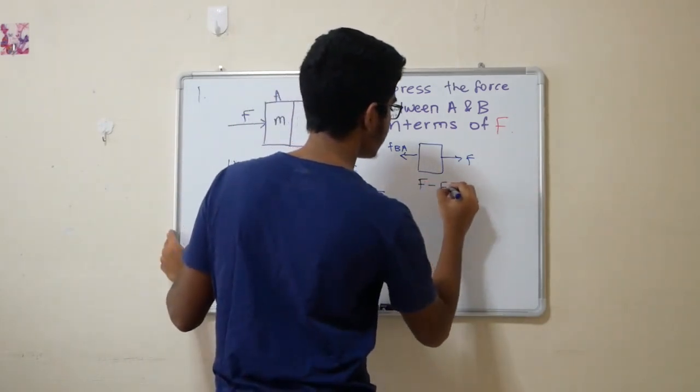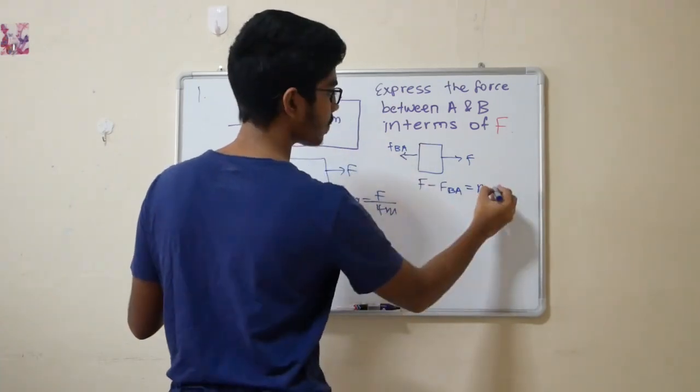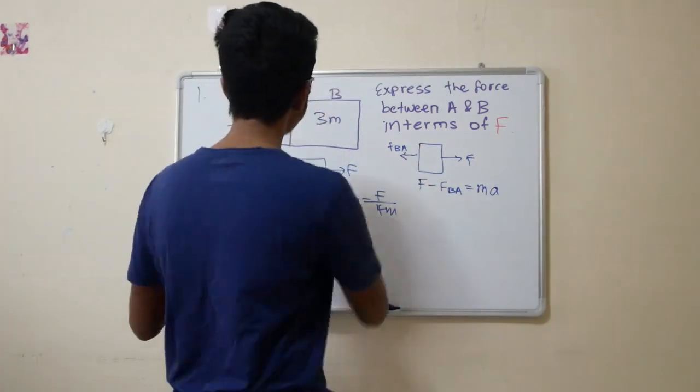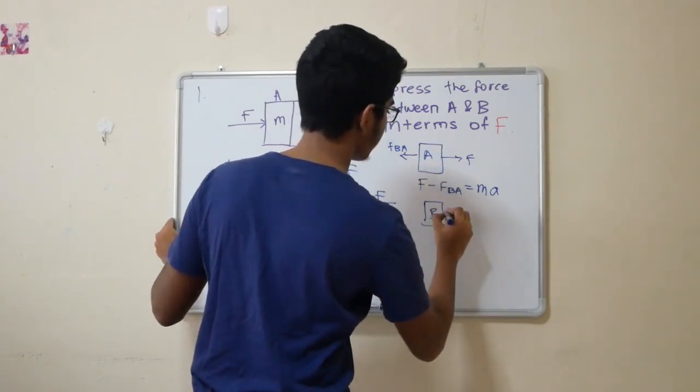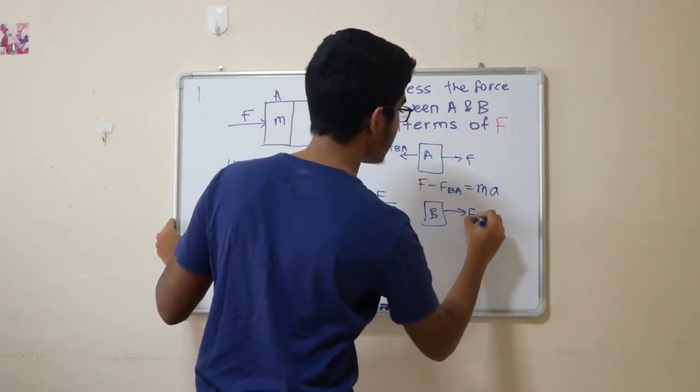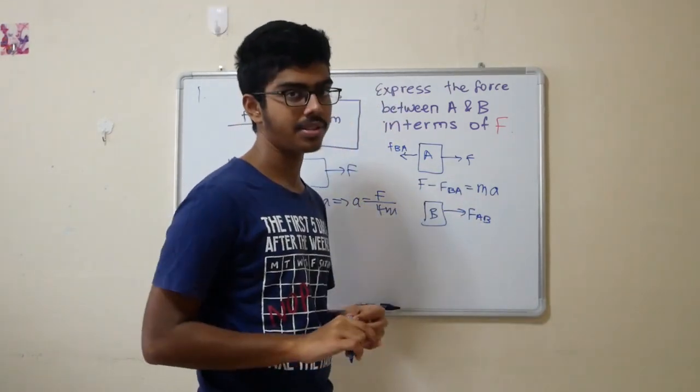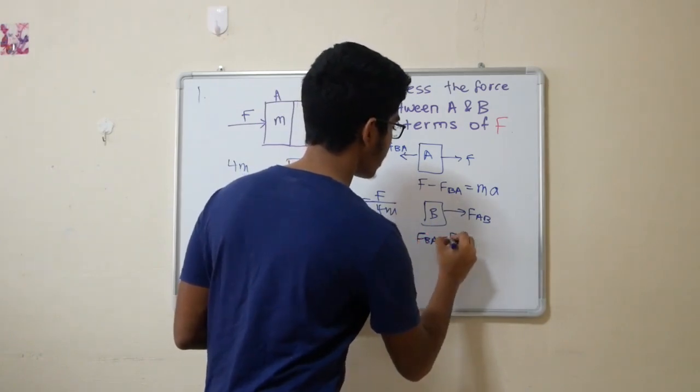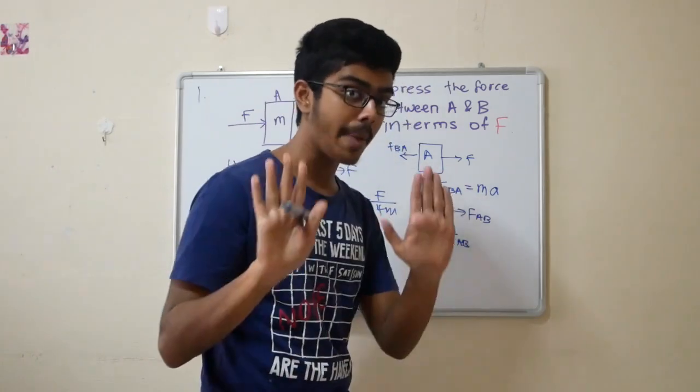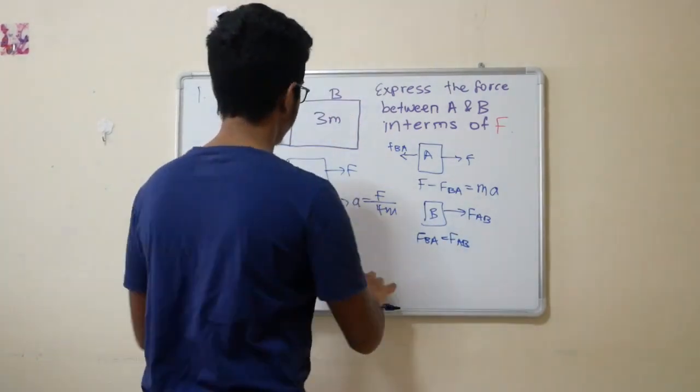We don't care about the vertical forces like mass and normal reaction. They cancel out each other because these two objects are in vertical equilibrium. So, F minus F_BA equals MA. Now, let's look at the case for body B. For body B, it has only the force AB. Now, the question is, are these action-reaction pair of forces?